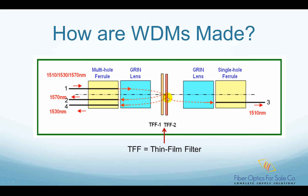Filter 2 is designed to pass 1510nm but reflect 1530nm. So 1510nm light passes and is focused into fiber 3 by the second green lens. On the other hand, 1530nm light is reflected by filter 2, passes filter 1 again, and is focused into fiber 4 by the first green lens. Why isn't 1530nm focused into fiber 2? That is because the filters have a thickness, so there is an offset in the vertical direction.